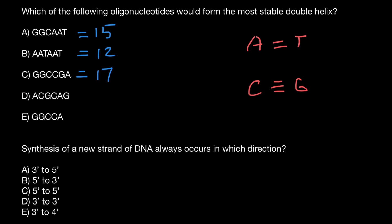The next variant is double, triple, triple, triple, triple, double, triple — so 16 hydrogen bonds here. And the last variant has triple, triple, triple, triple, and double, so we are going to have 14 hydrogen bonds.